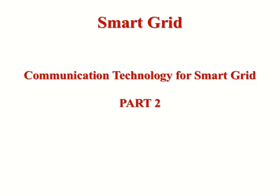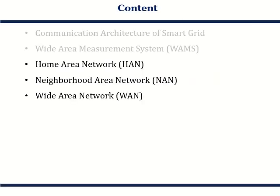Hello all. In communication technology for smart grids, this is Part 2. The contents already discussed in Part 1 were communication architecture and the wide area management system, also known as WAMS. Now in this particular video we will be discussing home area network (HAN), neighborhood area network (NAN), and wide area network (WAN). These three are the communication technologies we are going to cover.